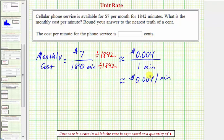we multiply by 100, or move the decimal point to the right two places. So this is also equal to .4 cents per minute.